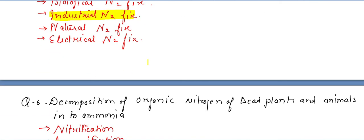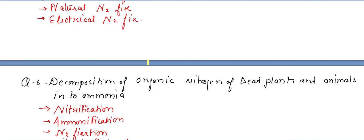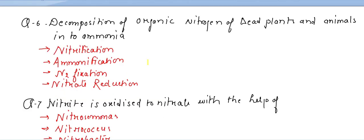The next question: decomposition of organic nitrogen of dead plants and animals into ammonia is called what? Options: nitrification, ammonification, nitrogen fixation, or nitrate reduction. The answer is ammonification.